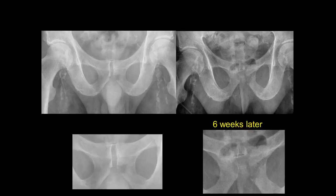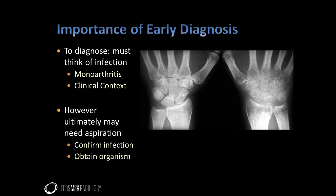Here is another case showing rapid progression of joint destruction in a septic pubic symphysis. Notice that even on the baseline study there is erosive change evident in the left pubic bone. This case of wrist joint infection shows how severe osteopenia can be, particularly when seen alongside the normal contralateral wrist. It is worth always keeping infection in mind when faced with a symptomatic joint — to diagnose it, you need to think of it.